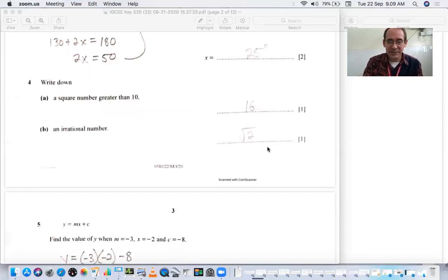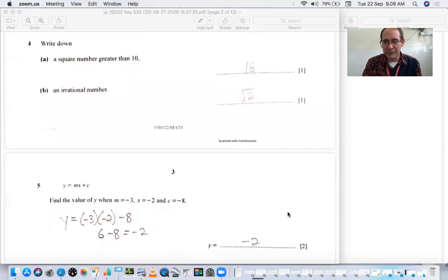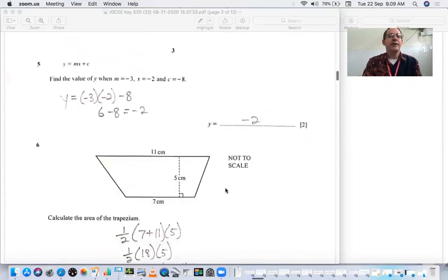Or you could put pi or e which are also irrational. But don't put fractions and don't put decimals that stop. Number 5, y equals mx plus c. Just plug in the values and calculate it out. You should get negative 2. All you have to do is be careful of your order of operations and your signs.